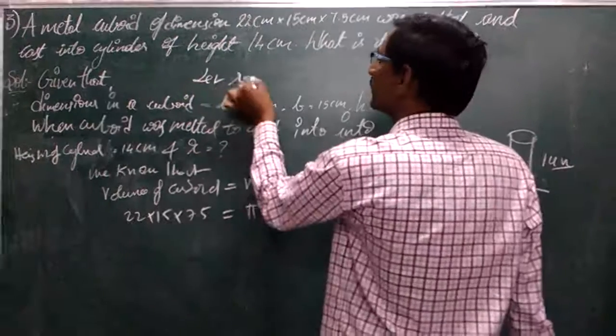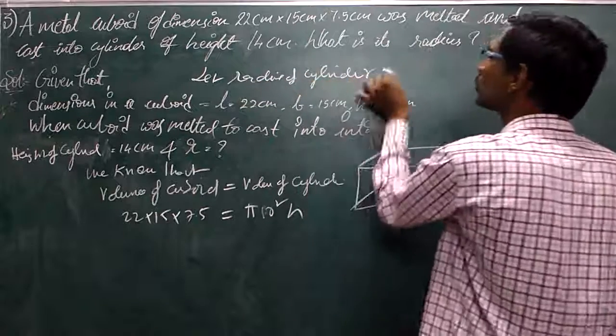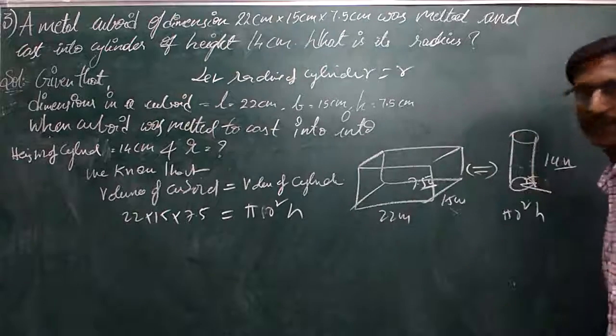The radius of the cylinder is equal to R centimeters.